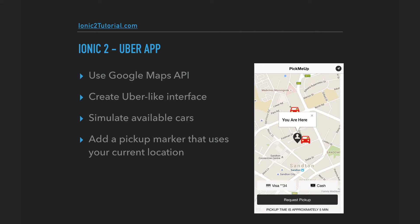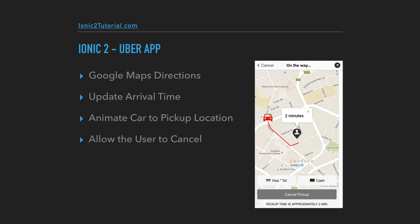To do this we're going to use multiple Google Maps APIs. We'll create an Uber-like interface and we'll simulate available cars in your area. We'll add a pickup marker that uses your current geolocation, and use Google Maps Directions to send a car to your location.